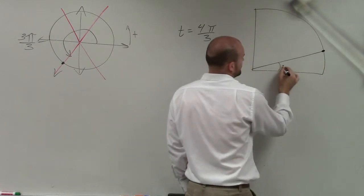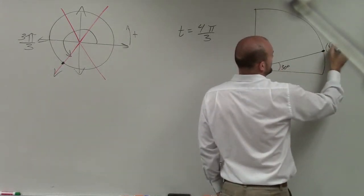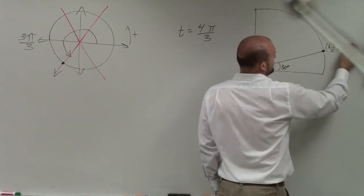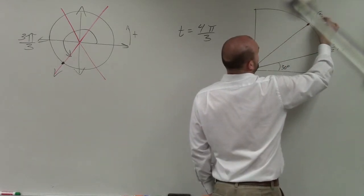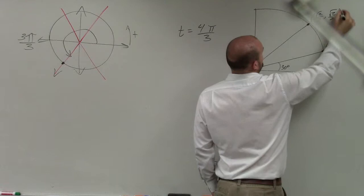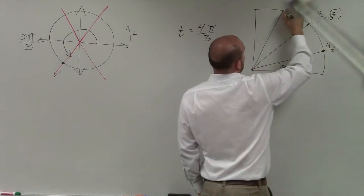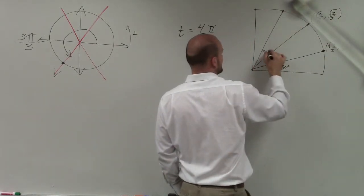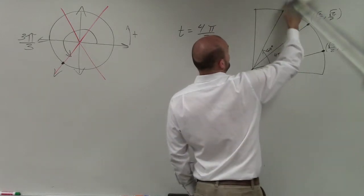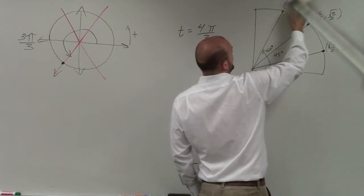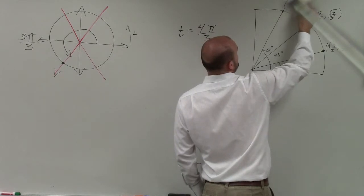We know at 30 degrees, I have √3/2 comma 1/2. At 45 degrees, I have √2/2 comma √2/2. And at 60 degrees, I have 1/2 comma √3/2.